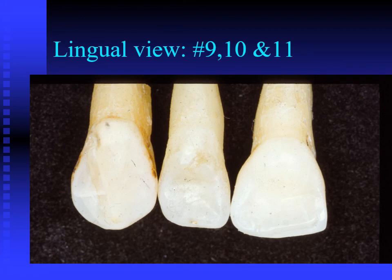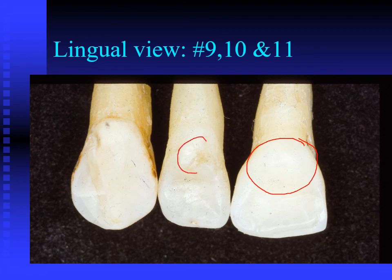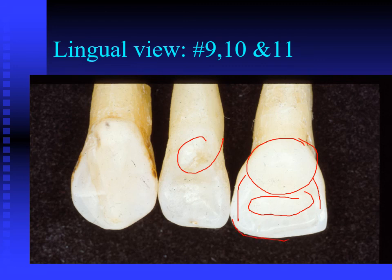Here we're looking at the lingual surfaces of natural extracted teeth. Most teeth will have the cingulum as the fourth lobe in the anterior. There are also mesial and distal marginal ridges, and usually a concave area that is the lingual fossa of the tooth. Most incisors, especially maxillary, will have both a facial incisal edge and a lingual incisal edge as the teeth erupt and become worn.